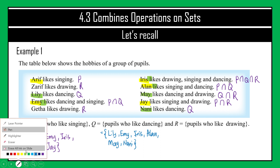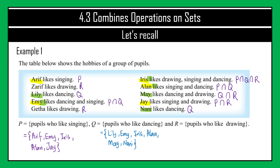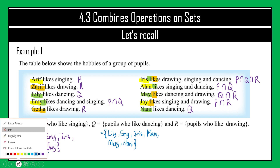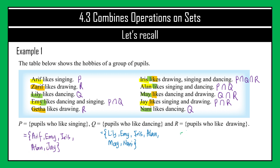For set R, those who like drawing — the pupils with label R are Zarif, Gita, Iris, May, and Jay. So those are the students belonging to set R.